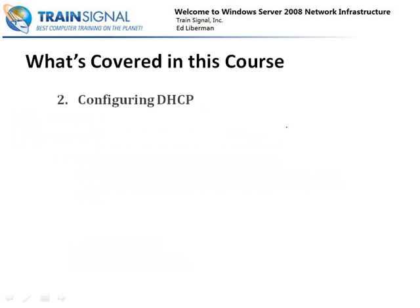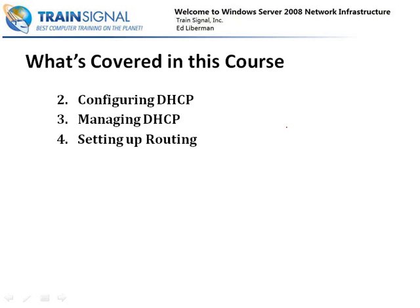So what do we go over in this course? After this video, video two covers configuring DHCP — setting up a DHCP server to deploy IP configurations to all your clients. Video three covers managing DHCP servers and keeping them running. Video four covers setting up routing, expanding your network from one subnet into multiple subnets. Video five covers configuring DNS, which is a main component of name resolution so users can use common names and computers can still communicate — also essential for Active Directory in Windows Server 2008. Video six covers managing your DNS servers and keeping them running.